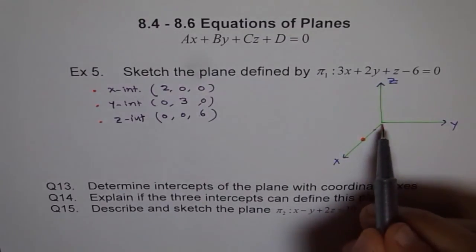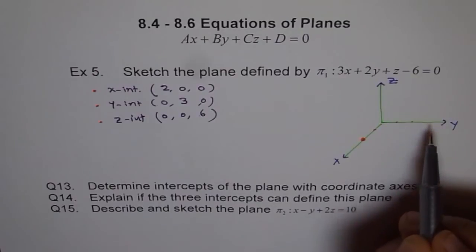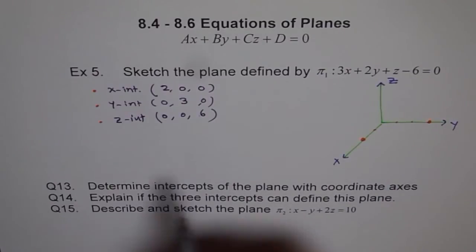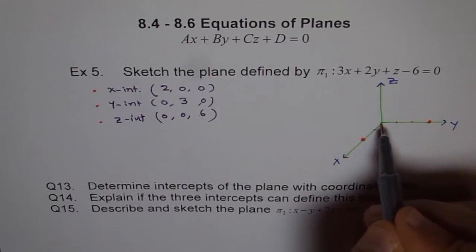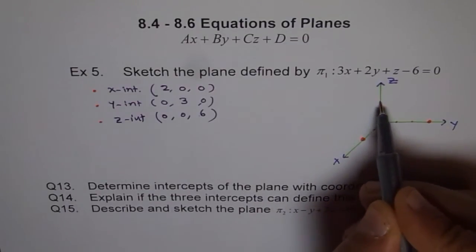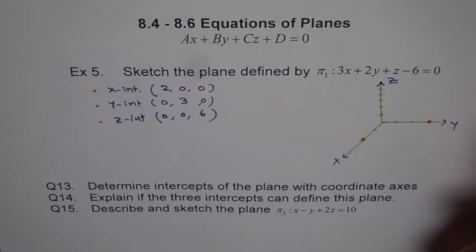y is 0, 3, 0. So, we have 0 and 1 and 2 and 3. So, we got this 0, 3, 0. z is 0, 0, 6. So, 0, 0 and then say 1, 2, 3, 4, 5. Let's say this is 6. So, right on the top, 6.